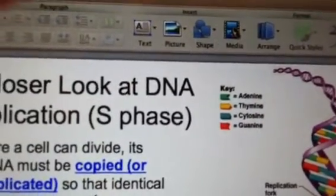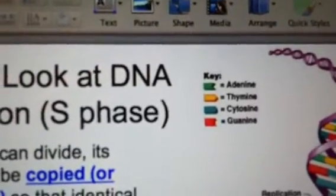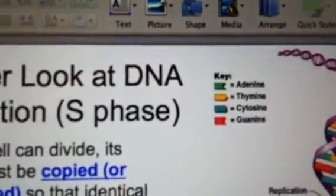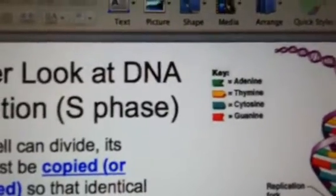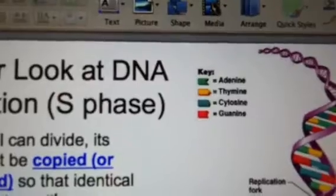Adenine always pairs with thymine, so A with T. And cytosine always pairs with guanine, C with G. There are many reasons for that. This is just a very simplified version of why they pair with each other for right now.